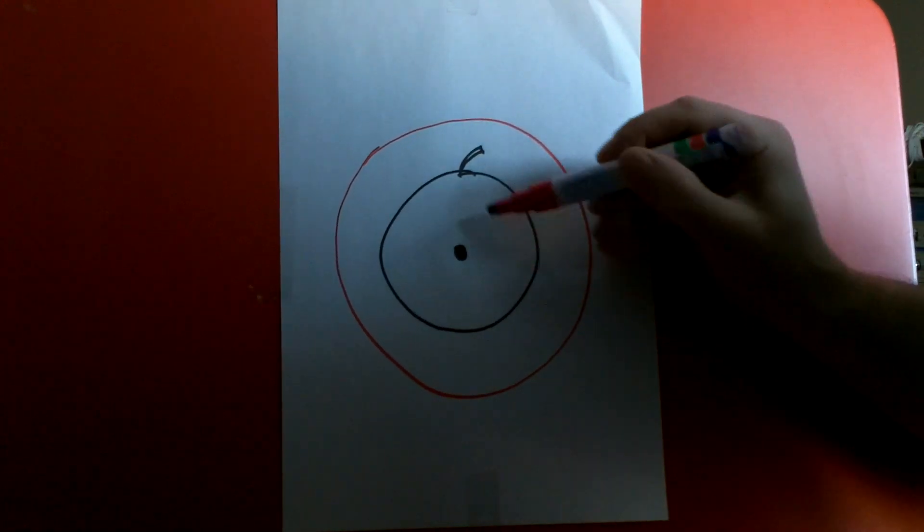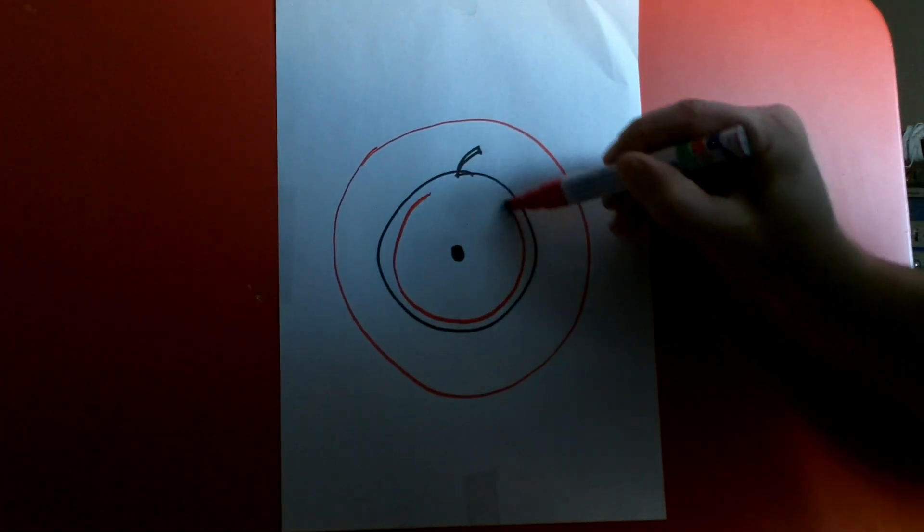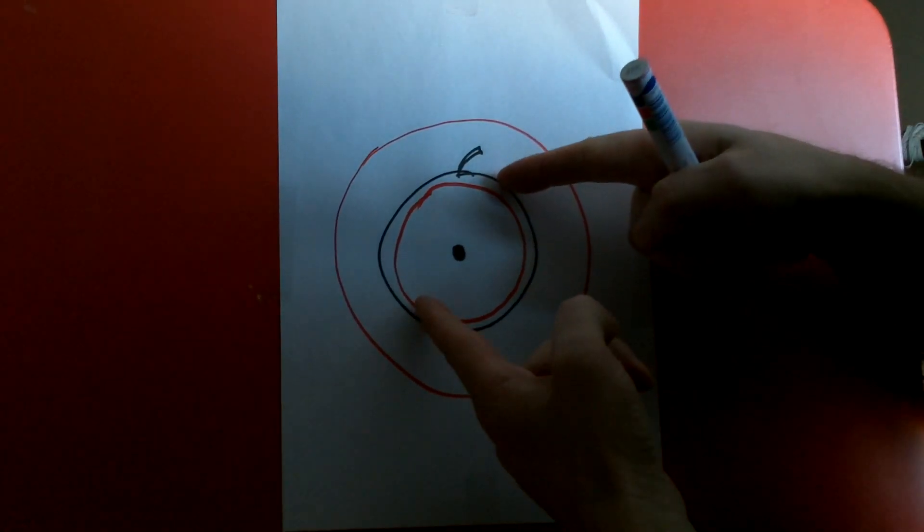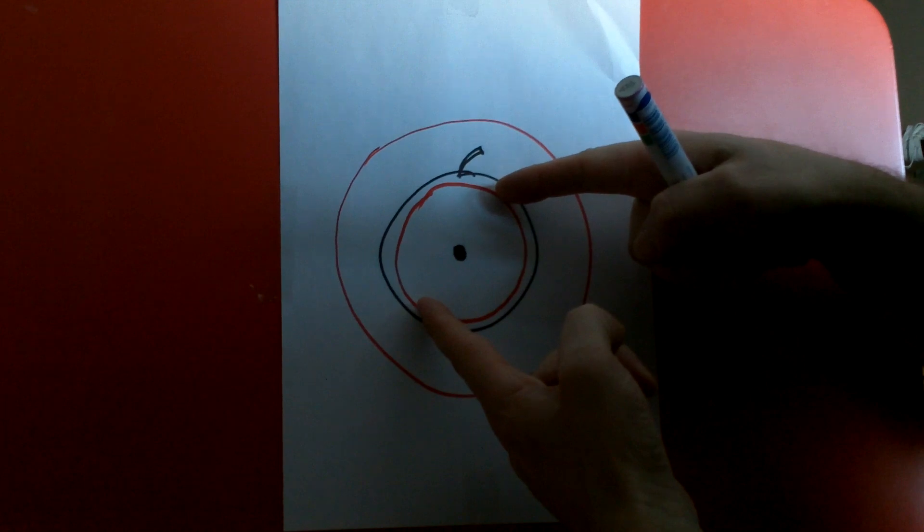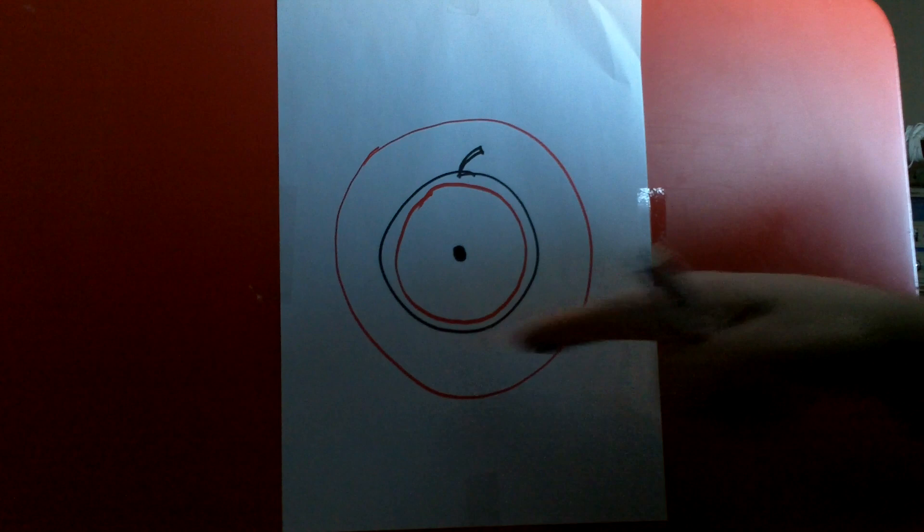Because then, your error margin is going to be around here. Suddenly you're going to group your arrows inside that red ring. That means inside the apple. Every arrow is going to hit the apple.